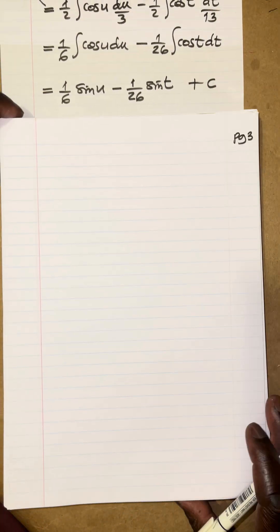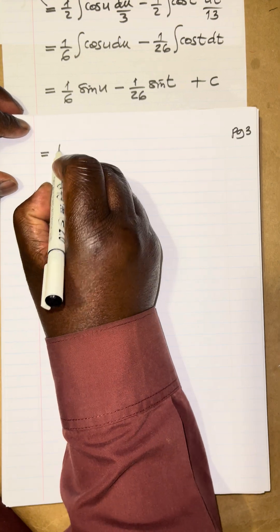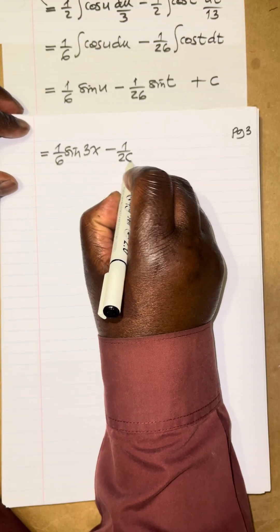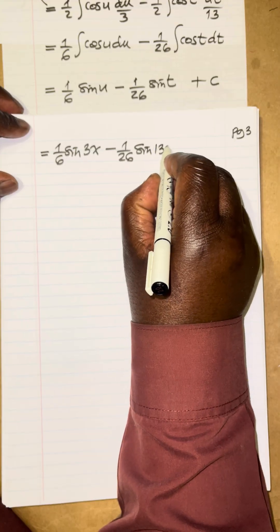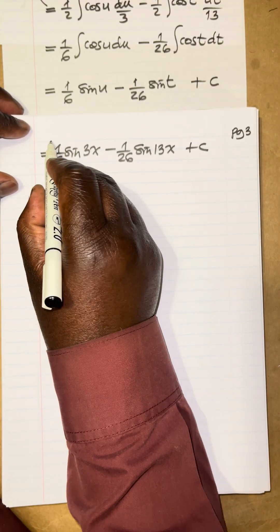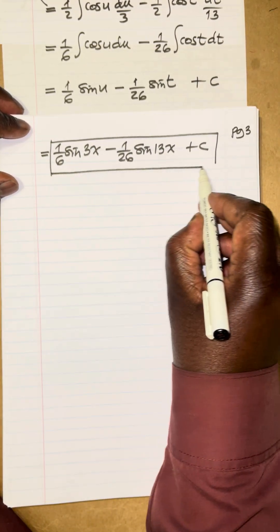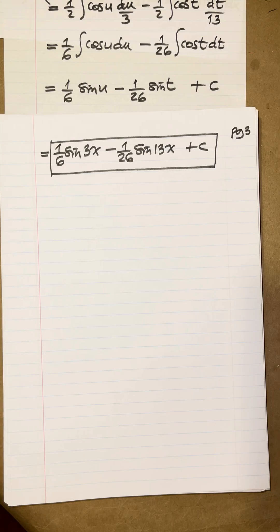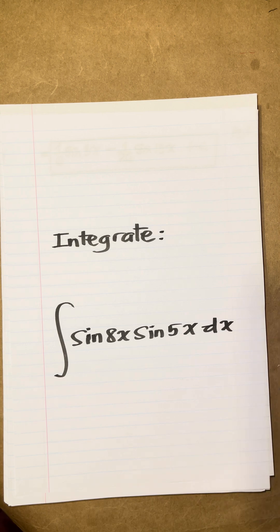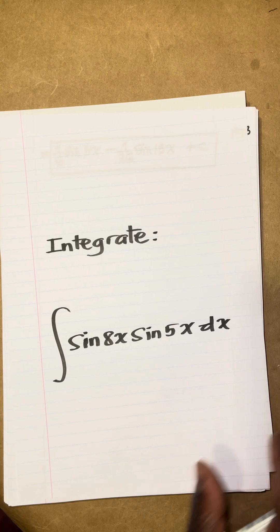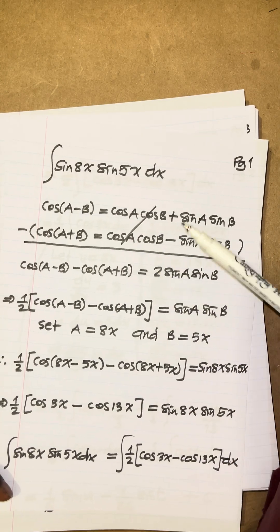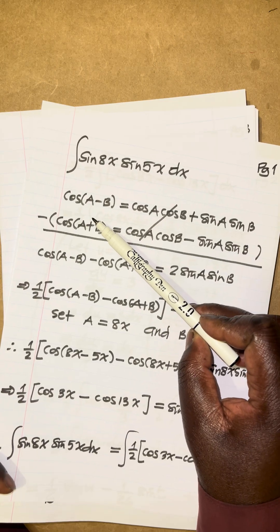The final solution is one-sixth sin(3x) minus one over 26 sin(13x) plus C. Just to remind you, the integral we worked on is the integral of sine 8x sine 5x dx, and we approached it using the compound angle formula for cosine — remembering that compound angle means the sum or difference of two angles.